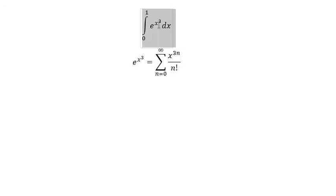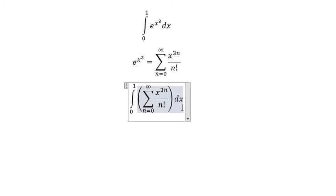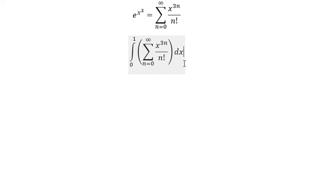Then we put this back into the interval. Now we integrate the series term by term. The integral of x to the power of 3n gives x to the power of 3n plus 1 divided by 3n plus 1 in the denominator.